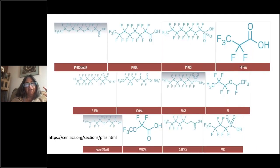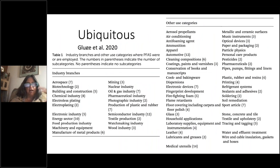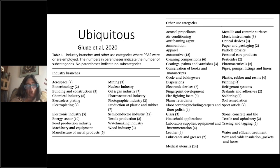PFAS is the general term for carbons attached to fluorines, and there are many different versions — long chains, short chains. PFOA and PFOS, the two at the top, are the most famous ones and the ones that have been banned. But there are many iterations. Here's a table from a recent paper looking at the different applications where these compounds are used: plastic, rubber and resins, refrigerant systems, apparel, automotive — they're all over.